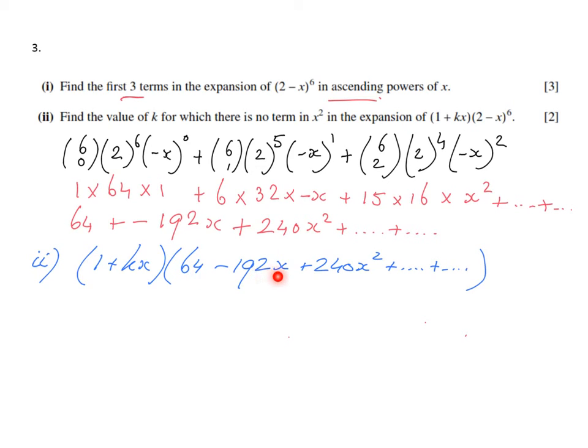Well, 1 times 64 - no, that's not x². 1 times -192x is not x², but 1 times 240x² will be a term in x². So 240x² after expansion is a term in x². I know there are more terms but they'll be x³, x⁴, x⁵, so 1 times those terms won't give me anything in x².